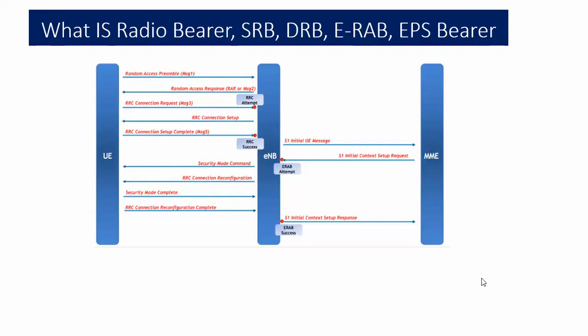Hi friend, today I am going to discuss about radio bearer: SRB, DRB, ERAB, and EPS bearer. We need to understand what is a radio bearer and where we can find radio bearer issues, DRB issues, ERAB issues, and EPS bearer issues. Sometimes there is confusion about where we need to check — at the UE log level, eNodeB level, or core level.